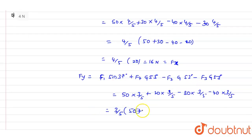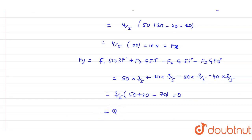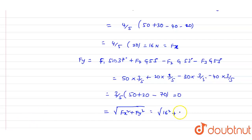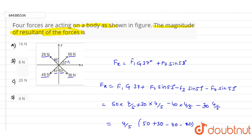Taking 3/5 as common: Fy = (3/5)×(50 + 20 − 30 − 40) = (3/5)×0 = 0. Therefore, the magnitude of the resultant force is √(Fx² + Fy²) = √(16² + 0²) = 16N. So option A, 16 Newtons, is the correct answer for this question.